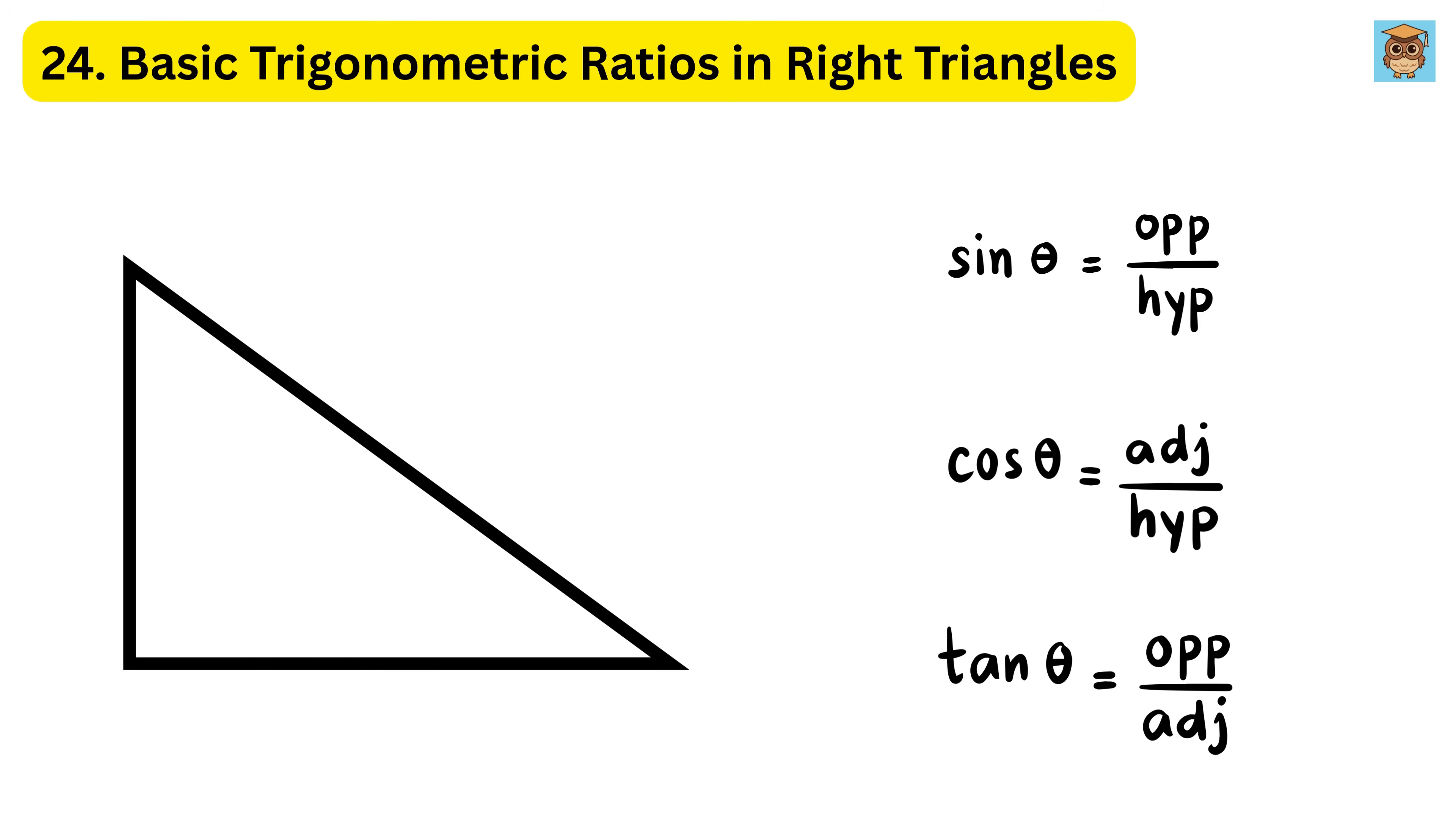For example, if a right triangle has legs of 3 centimeters and 4 centimeters and a hypotenuse of 5 centimeters, then the sine of the angle opposite the 3 centimeter side is 3 divided by 5.